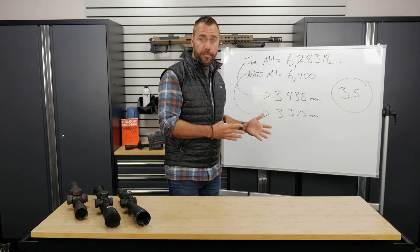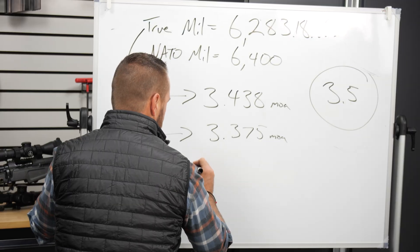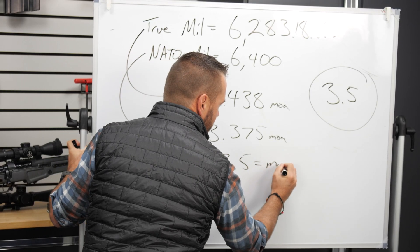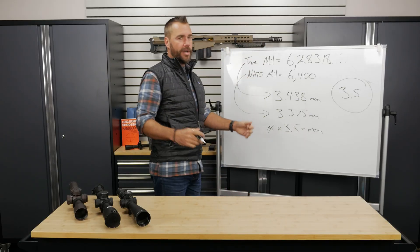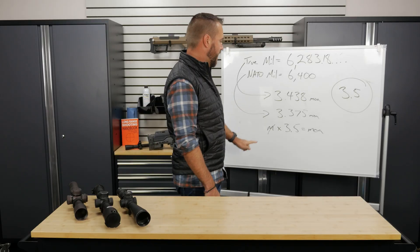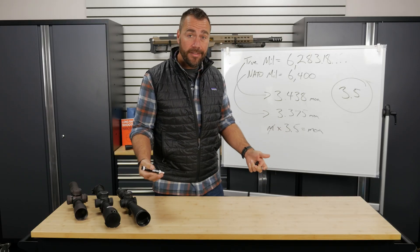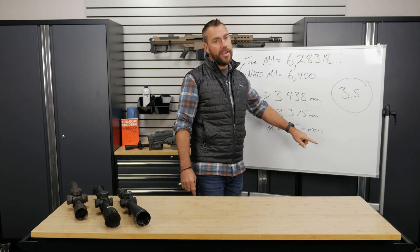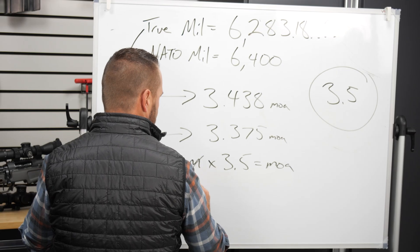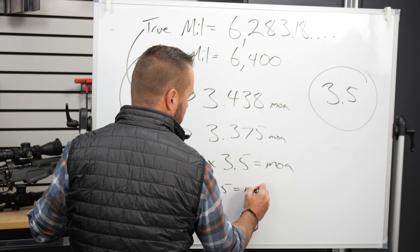So I take the number of mills, if I'm trying to convert to minutes, and I multiply it by 3.5 — mills times 3.5 gives me my minutes of angle. For example: if I have 1 mill, that's 3.5 minutes of angle. If I have 2 mills, that's 7 minutes of angle — 2 times 3.5 equals 7. And if you want to convert the other way, if you have minutes of angle, you divide by 3.5 to get your mills.